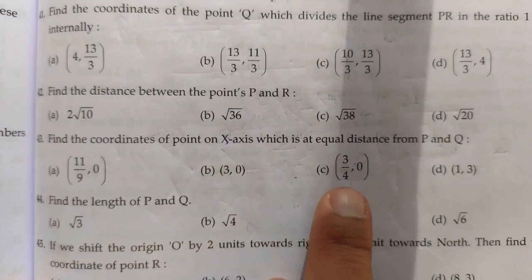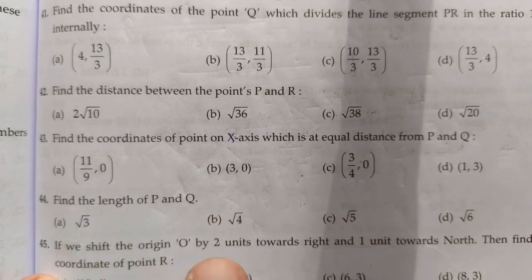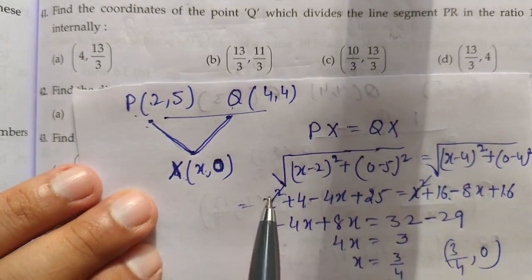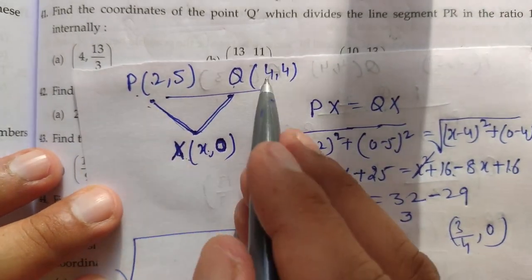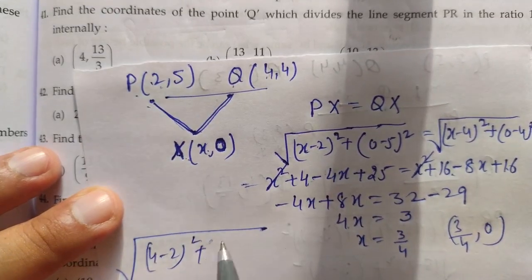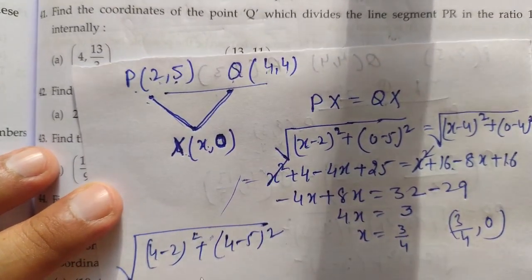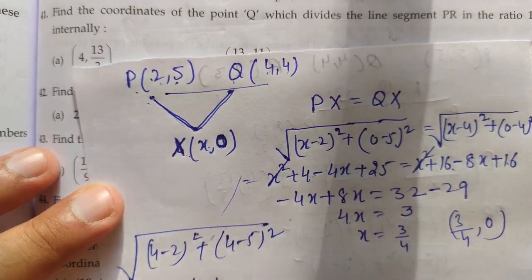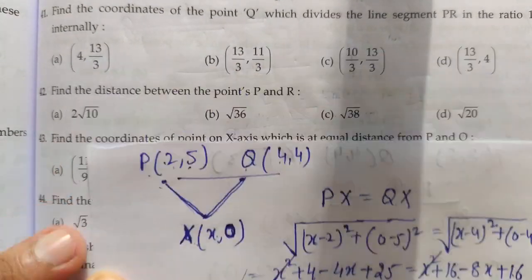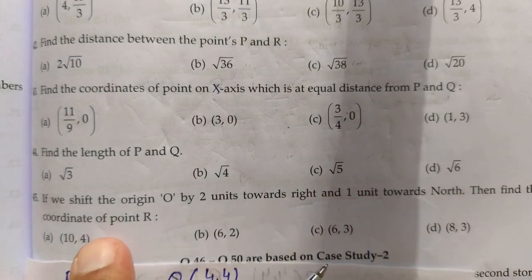Find the length of PQ. Using the distance formula: PQ = √[(4−2)² + (4−5)²] = √[2² + (−1)²] = √[4 + 1] = √5 units.